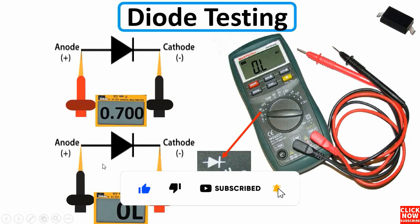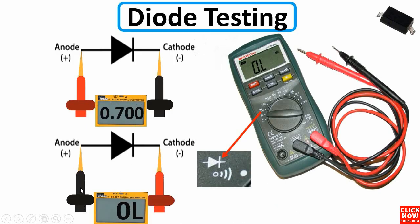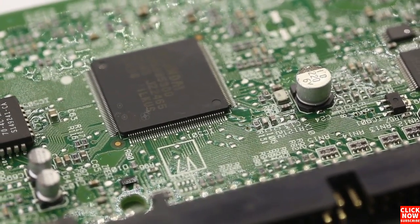You should get a reading of about 0.6 or 0.7 volts in the forward direction. If you switch the probes — black on the anode and red on the cathode — you should get no reading. These two states confirm the diode is good. However, if you get a reading in both directions or get a continuity reading, the diode has failed and should be replaced.